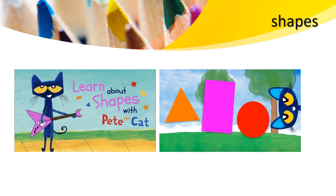If you look at the right, what shapes do you recognize? Do you see a triangle? Do you see a circle? A rectangle? I want you to look around you and see a circle around you. Yes, it might be a clock — that is a circle. There is also a rectangle. Do you see a rectangle around you? Yes, your bed might be a rectangle.